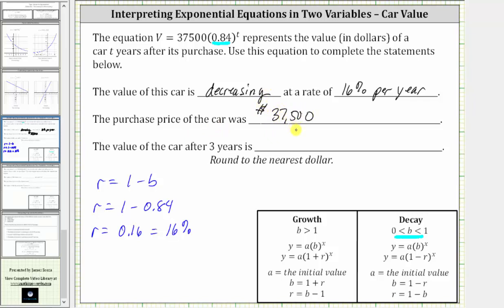And again, this should make sense because if we set t equal to zero, we would have v equals 37,500 times 0.84 raised to the power of zero, and 0.84 raised to the power of zero is one, giving us a value for v of 37,500.